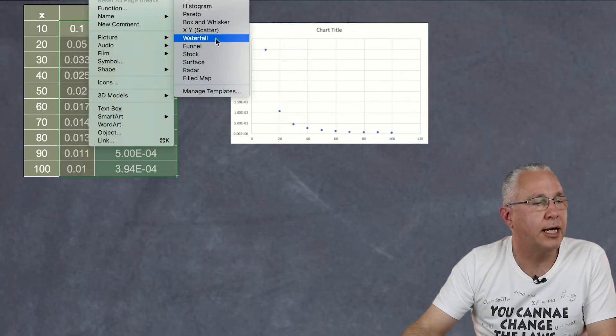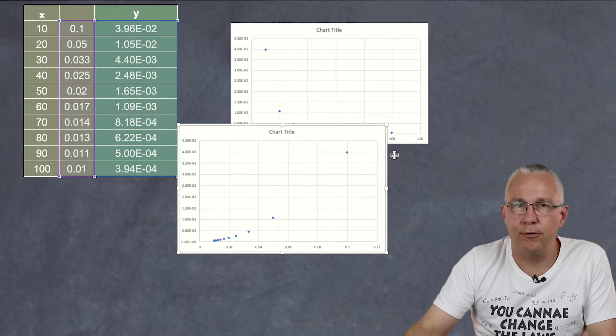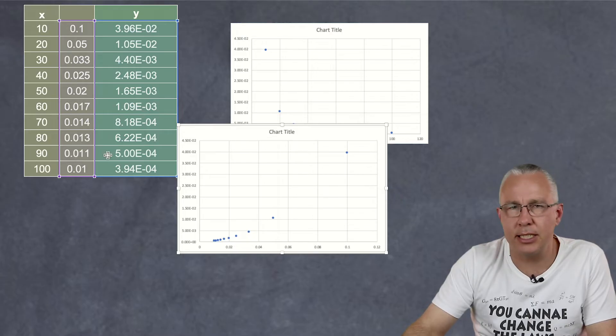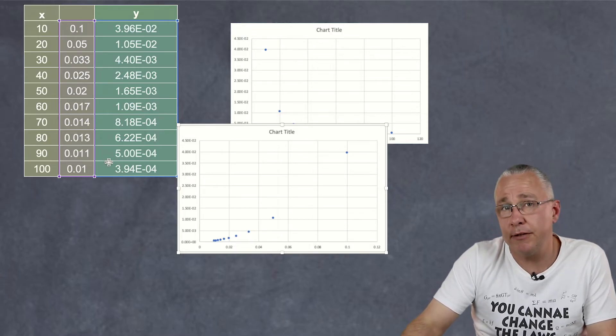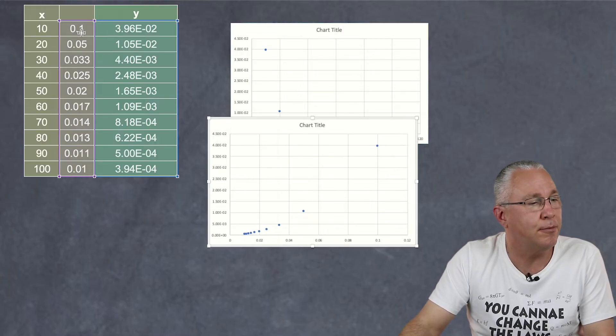Insert, Chart and XY Scatter. Oh look at that. I'm getting a curve. What does that mean? Well that means this is not the relationship. It's not an inverse relationship. It's actually an inverse square relationship. Let's confirm that.